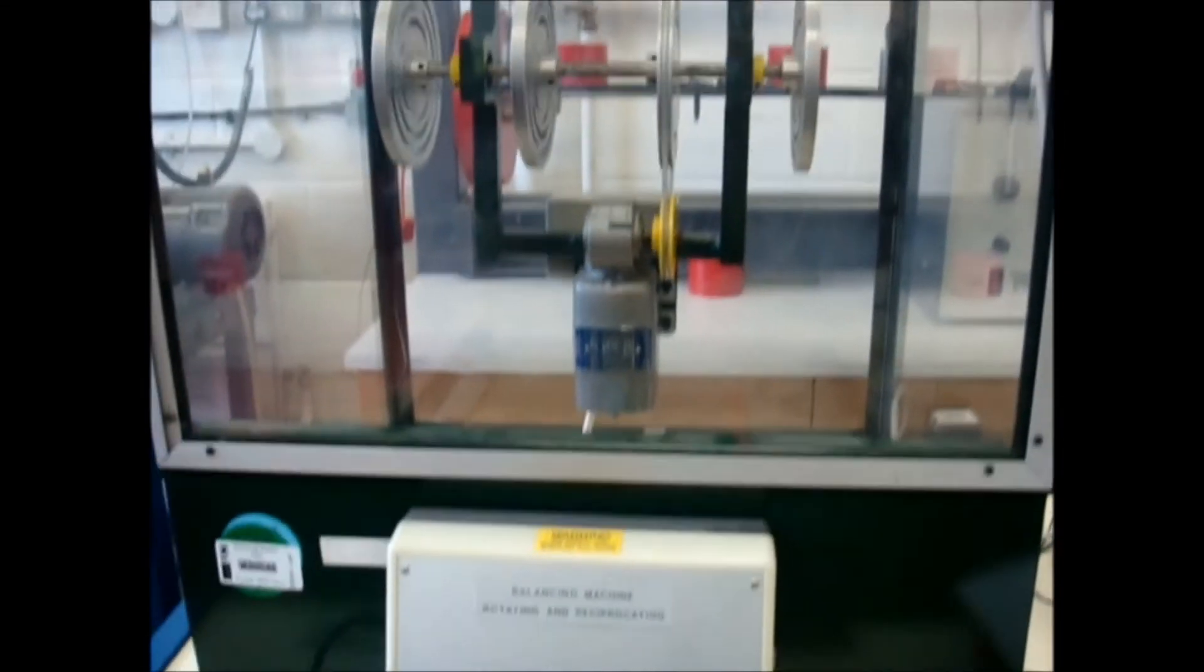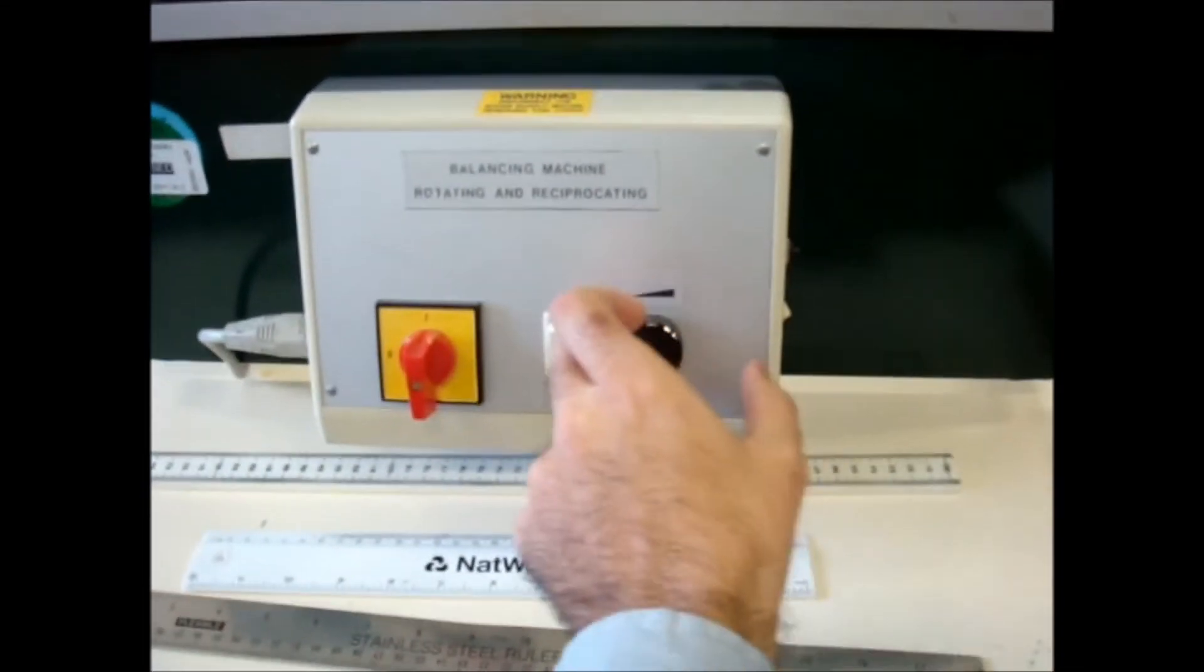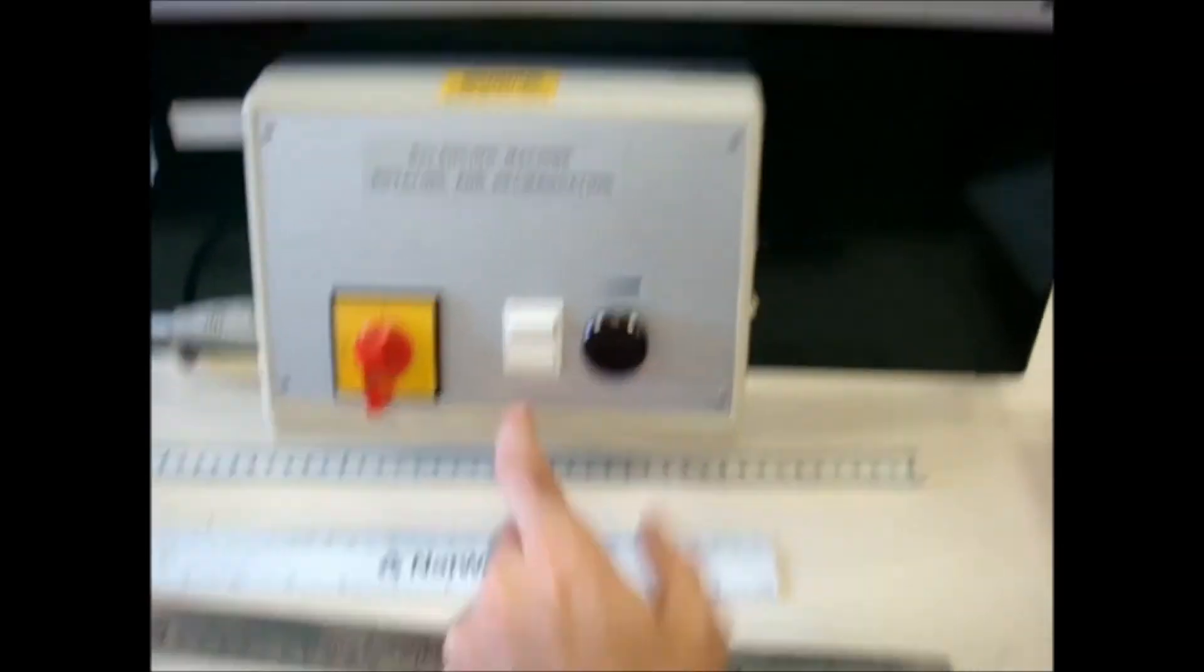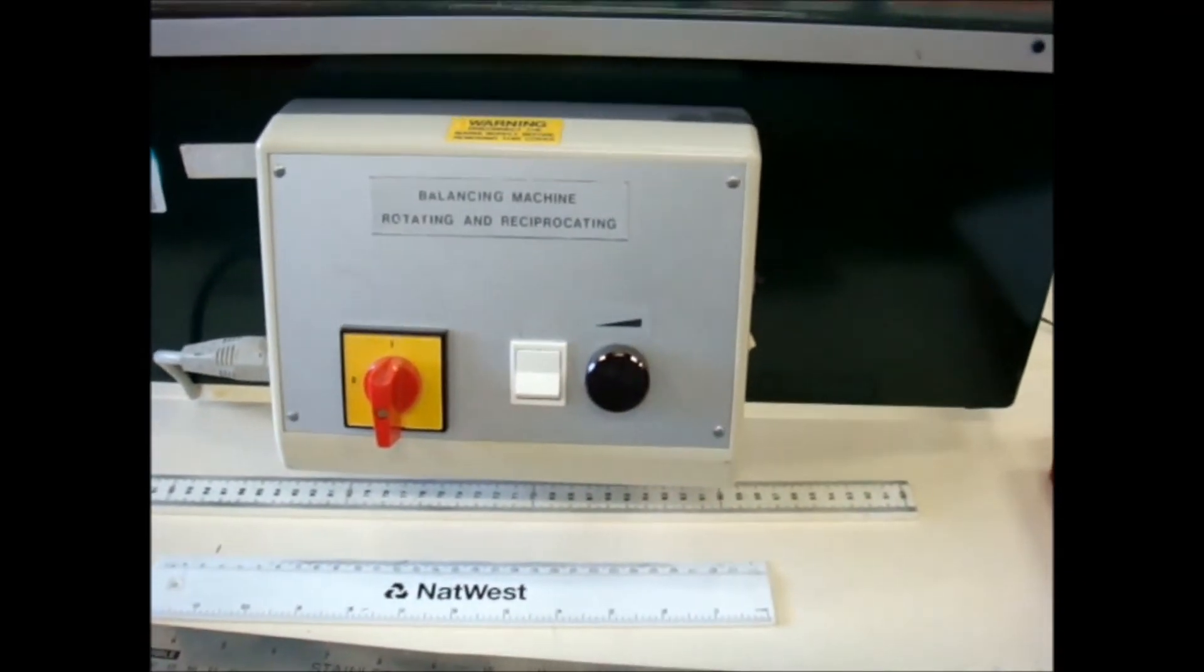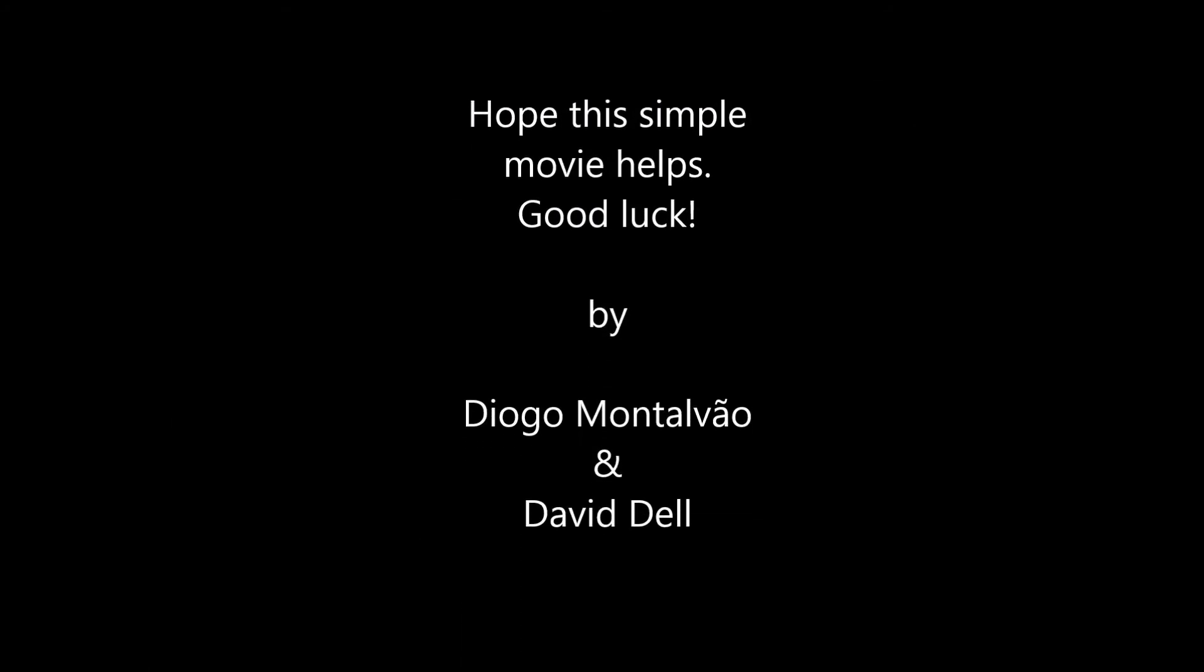To turn off the machine, I just reduce the speed on this knob. I turn this button off and now I rotate this.